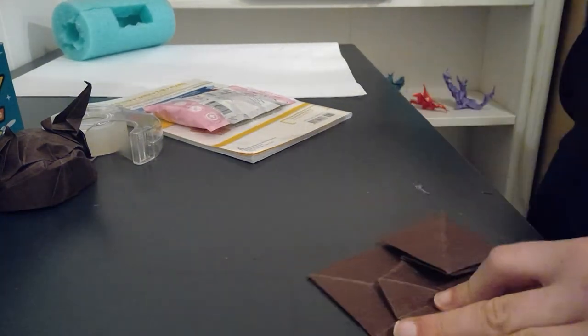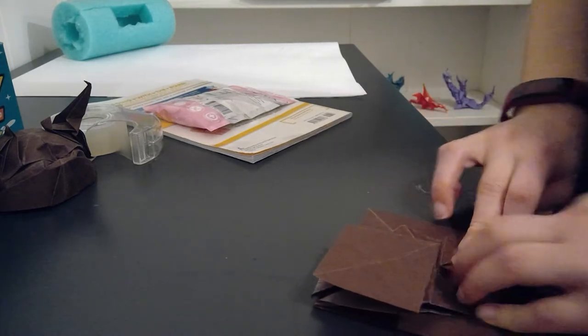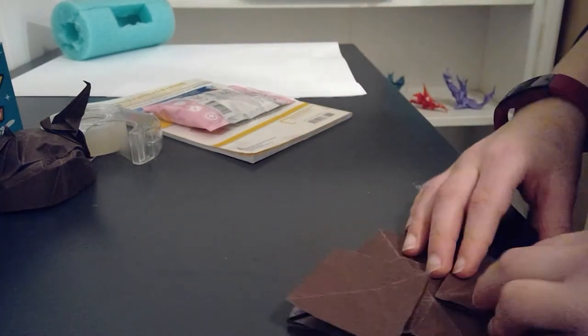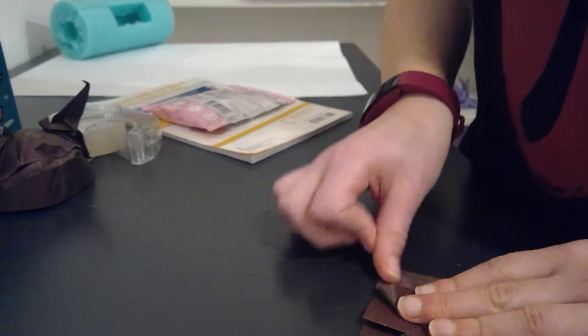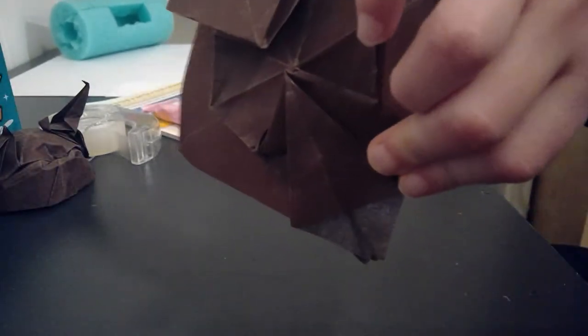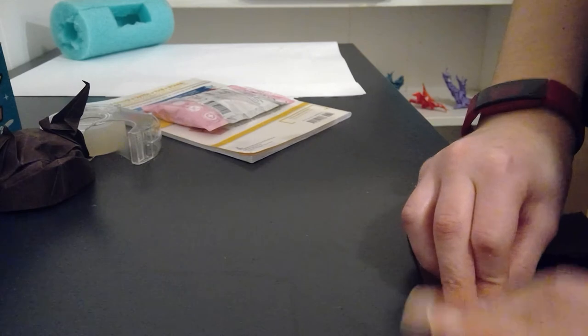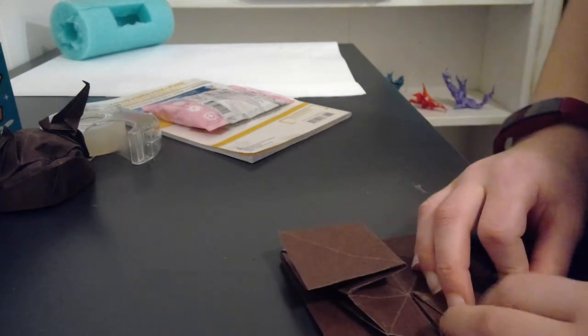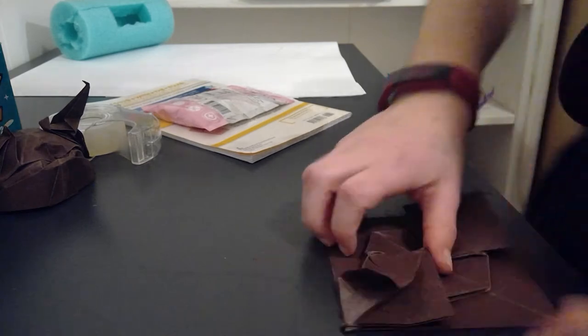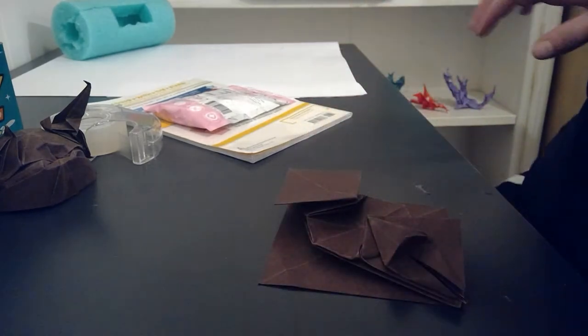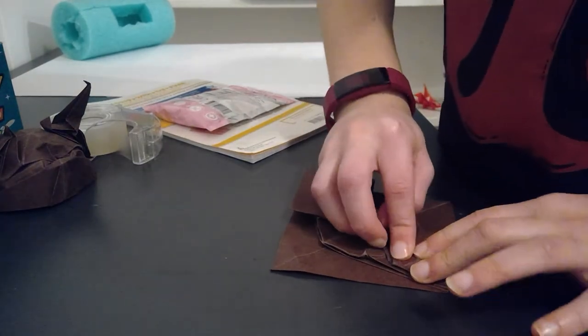Now unfortunately we're not done. We're going to fold the top edges of this base - the mini base or sub-base, I don't know what you want to call it - down, and unfold. Now you're going to turn those into squash folds. Do one at a time, just do one first. It should look like this.